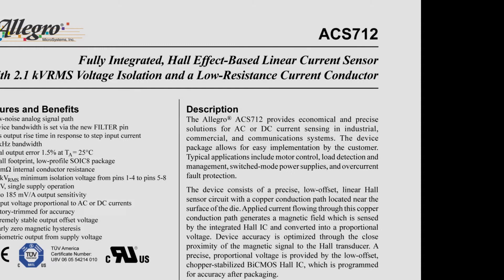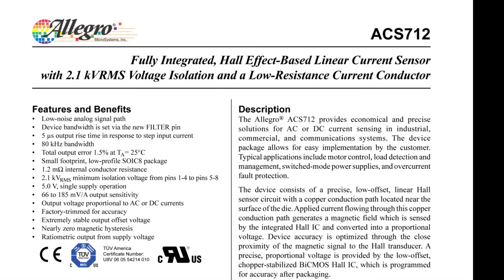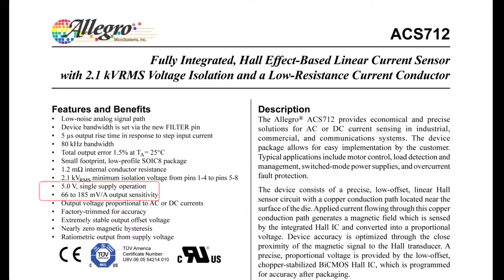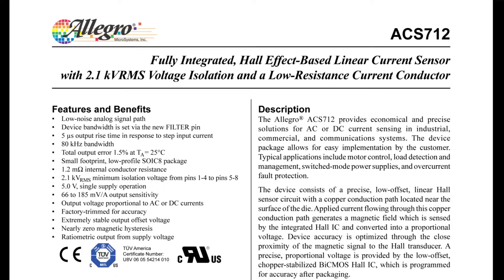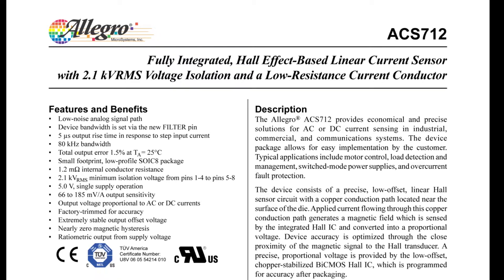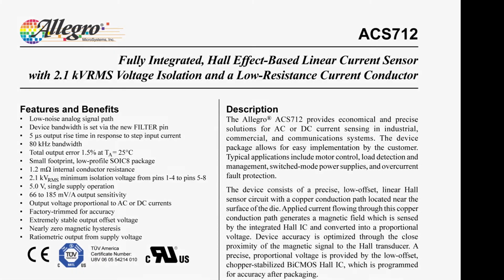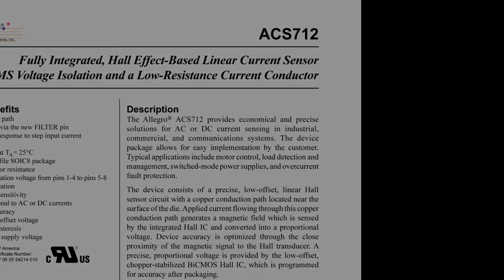If we take a look at the data sheet of ACS712, we see that this sensor works on 5 volt DC and has 66 to 185 millivolts per ampere output sensitivity depending on the type of sensor we are using. ACS712 comes in three different current ranges: 5 ampere, 20 ampere, and 30 ampere range, and we can see that its output varies proportional to AC and DC currents.